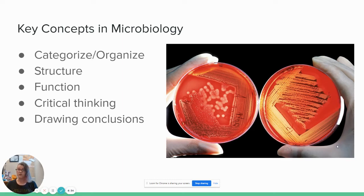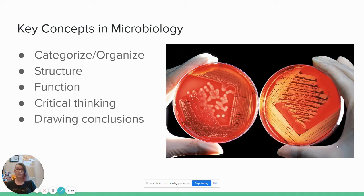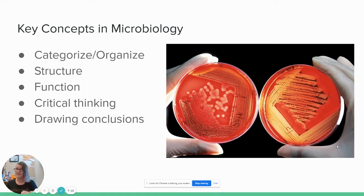We want to know about their structure — the physical structures that make up these very tiny creatures — and we want to know about their functions and what they can do with those structures and how they relate to the world around them. The other concepts we're going to cover really involve being able to understand how you can study something you can't see, which involves critical thinking and drawing distinct conclusions from data that isn't always precise. We want to be able to use our brains and say: this makes sense, this doesn't. I can draw a connection between these things and take that information and apply it to a new situation.